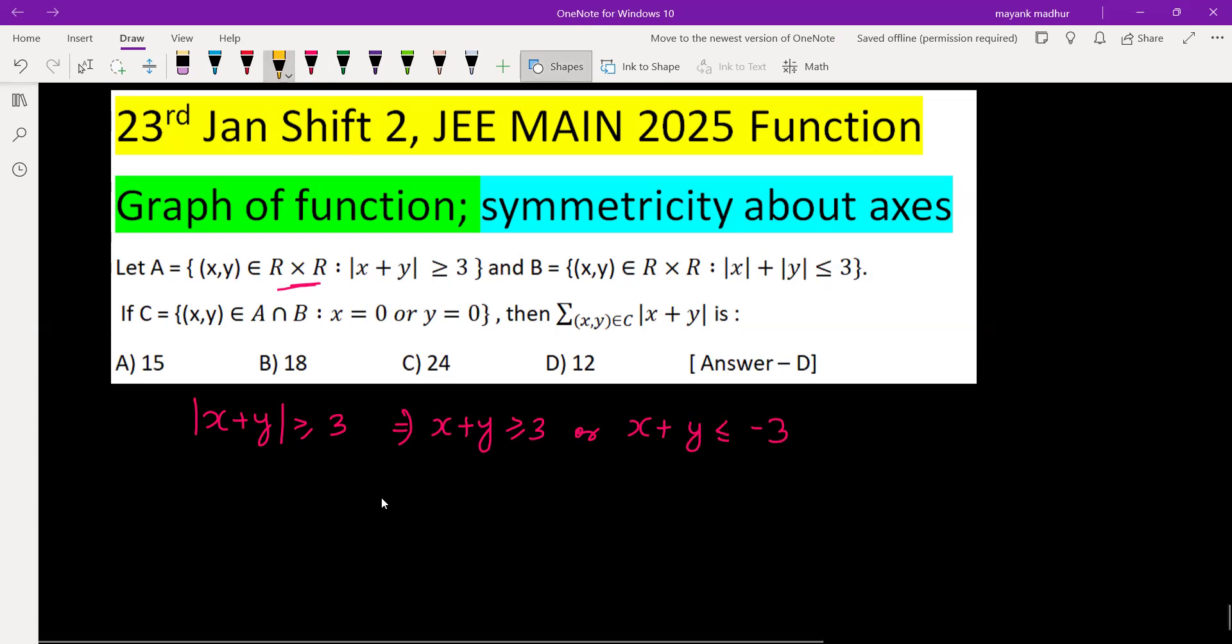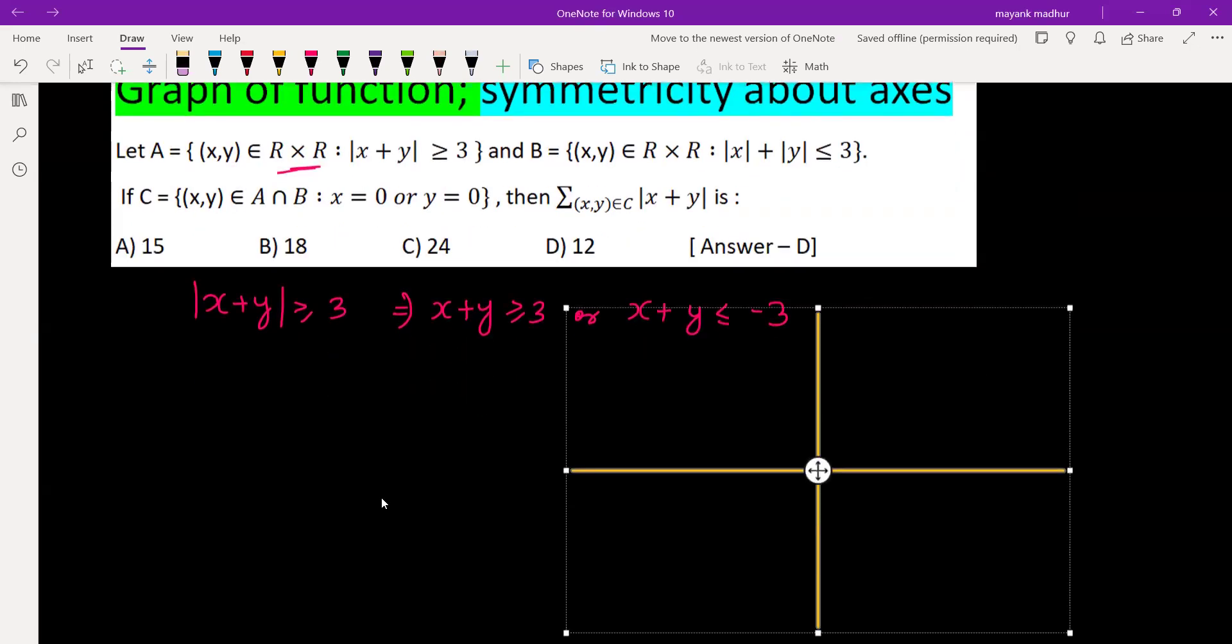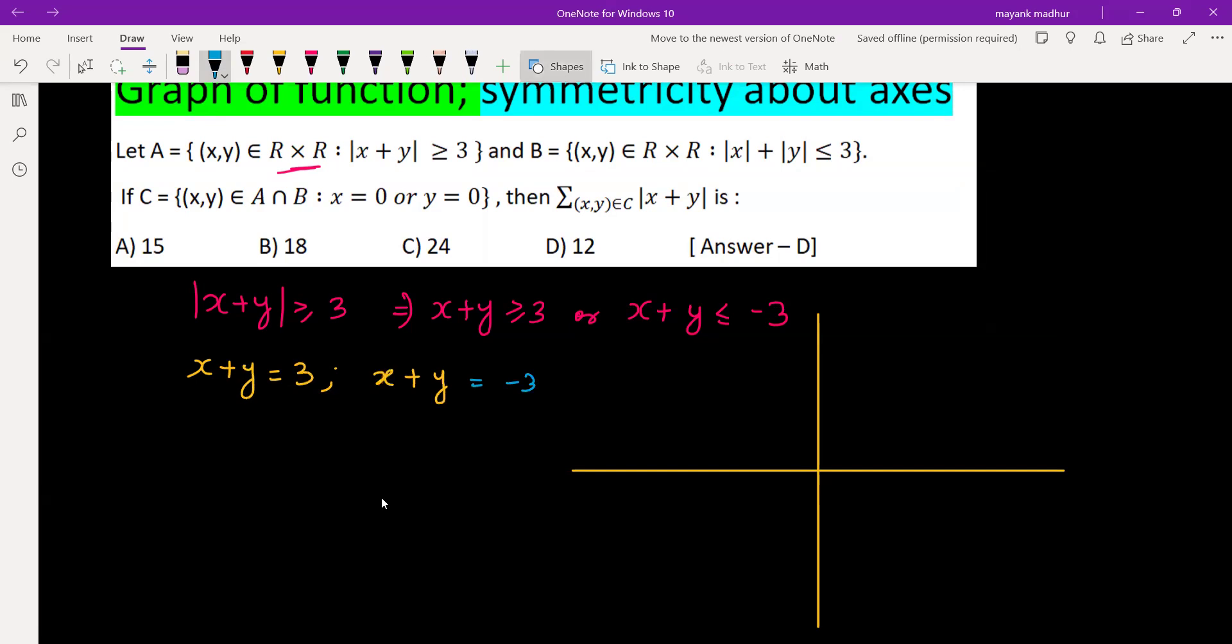Let's draw the graph of this in the 2D plane. x plus y equals 3 is the boundary line case, which will be a straight line having slope minus 1. Similarly, x plus y equals negative 3 is also the boundary line case having slope minus 1.